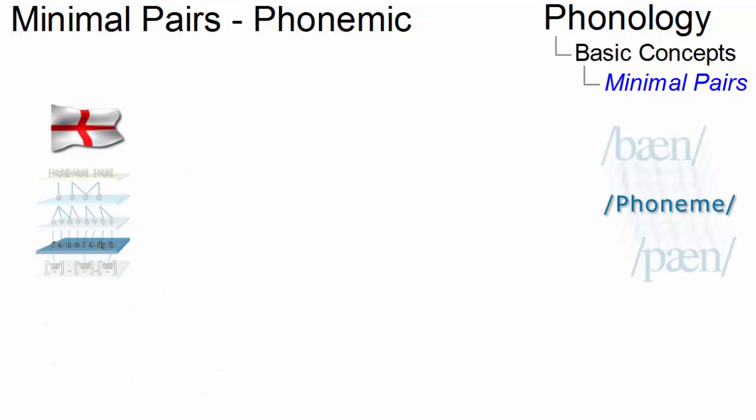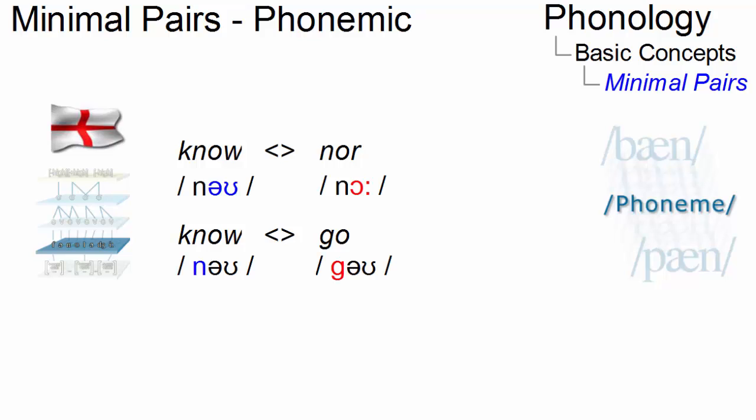Let us look at some minimal pairs in present-day English to illustrate phonemic differences. Orthographically, these two word pairs do not seem to be minimal pairs at all. If we look at their phonemic structure, however, they clearly differ in one phoneme and are thus minimal pairs. So it's the phonemic structure that matters, not the orthographical one. The example no versus though once more exemplifies this point.